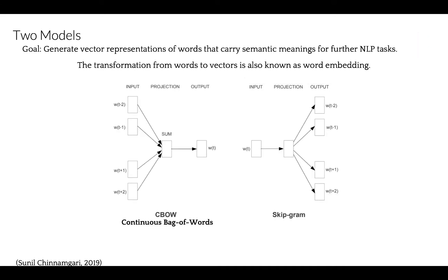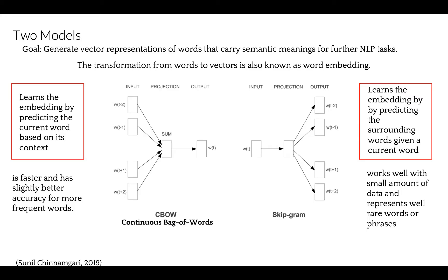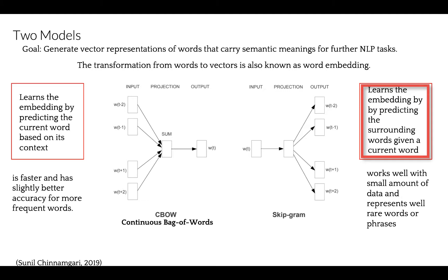Word2Vec introduced two different learning models to learn word embeddings: Continuous Bag of Words (CBOW) on the left, and Skip-gram on the right. CBOW learns embeddings by predicting the current word based on its context, while the Skip-gram model learns by predicting surrounding words given a current word. CBOW uses context to predict a target word, while Skip-gram uses a word to predict a target context. CBOW is typically faster with slightly better accuracy for frequent words, while Skip-gram works well with small amounts of data and represents rare words and phrases better.